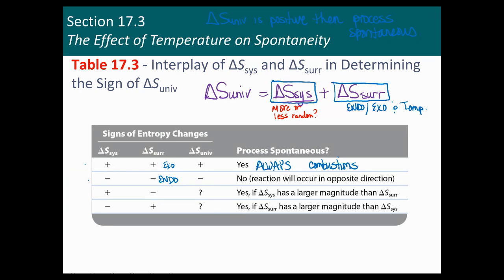Then you have the last two scenarios where the two things are opposing each other. In the third one, a process is becoming more random but is endothermic — what's going to decide this is temperature, because temperature decides how big delta S of the surroundings is. The last one would be a process where entropy is decreasing — usually not favorable — but it's exothermic. Again, temperature will decide.